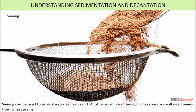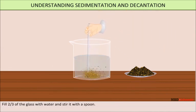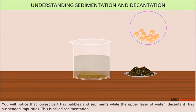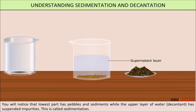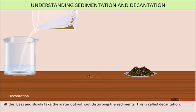Take some pebbles along with fine dust in a glass. Fill two-thirds of the glass with water and stir it with a spoon. Allow it to settle down. You will notice that the lowest part has pebbles as sediment, while the upper layer of water has suspended impurities. This is called sedimentation. Tilt the glass and slowly pour the water out without disturbing the sediments. This is called decantation.